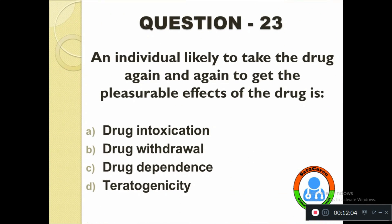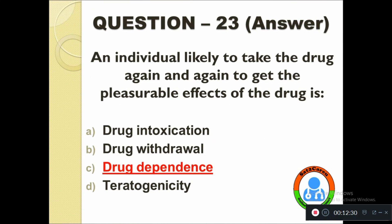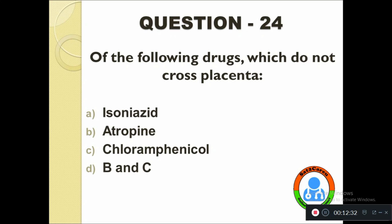Question number twenty-three: An individual likely to take the drug again and again to get pleasurable effects of the drug is — option A: Drug intoxication, B: Drug withdrawal, C: Drug dependence, D: Teratogenicity. The correct answer is Drug dependence.